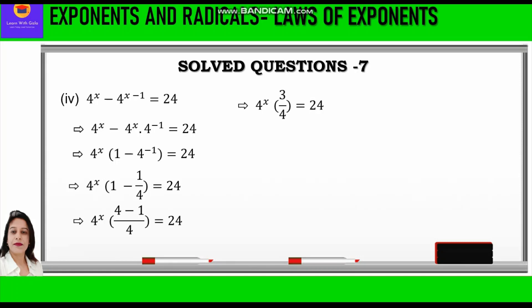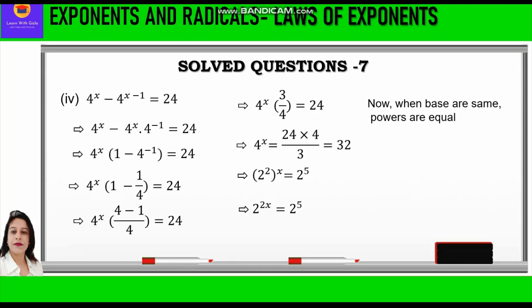We shall cross multiply: 4 raised to power x is equal to 24 into 4 upon 3, which is equal to 32. Now we make the base same by writing 4 as 2 square and 32 as 2 raised to power 5. So 2 square whole raised to power x is equal to 2 raised to power 5, giving 2 raised to power 2x is equal to 2 raised to power 5. When the base is same, powers are equated, so 2x is equal to 5, and x is equal to 5 by 2.